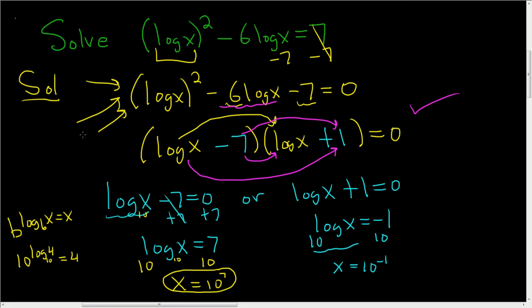So x ends up being x equals 1 over 10, right? You bring the 10 downstairs and the exponent becomes positive. That's it.